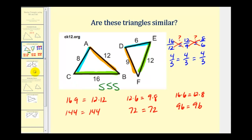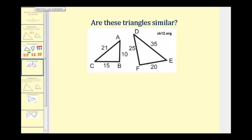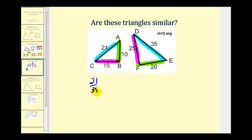Let's look at one more example. We identify corresponding sides: the longest sides, the shortest sides, and the remaining sides. We check whether twenty-one to thirty-five equals fifteen to twenty-five, which equals ten to twenty. If this is not true, the triangles are not similar.